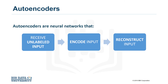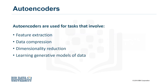Autoencoders were first introduced in the 1980s by Jeffrey Hinton. According to Pierre Baldy of UC Irvine, they address the problem of backpropagation using the input data as the teacher. Generally speaking, the main goal of these neural nets is to take unlabeled inputs, encode them, and then try to reconstruct them afterwards, based on the most valuable features identified in the data. They're used for tasks that involve feature extraction, data compression, dimensionality reduction, and learning generative models of data.